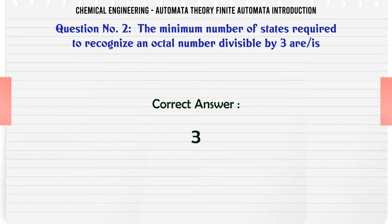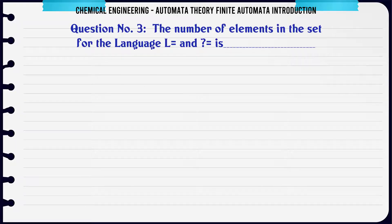The number of elements in the set for the language L = {X ∈ R | length of X is at most 2} and {0,1} is: A: 7, B: 6, C: 8, D: 5. The correct answer is 7.